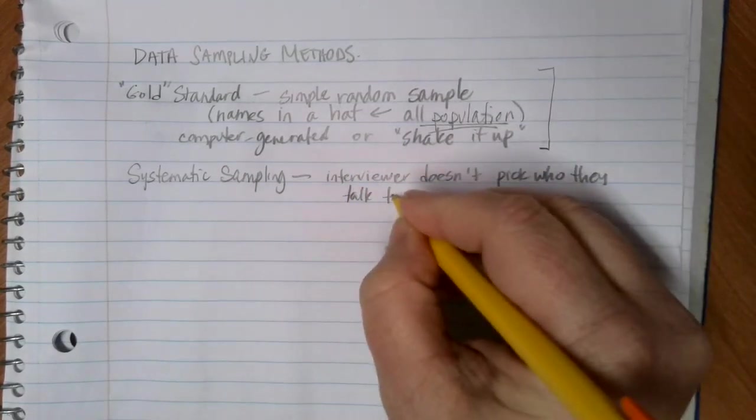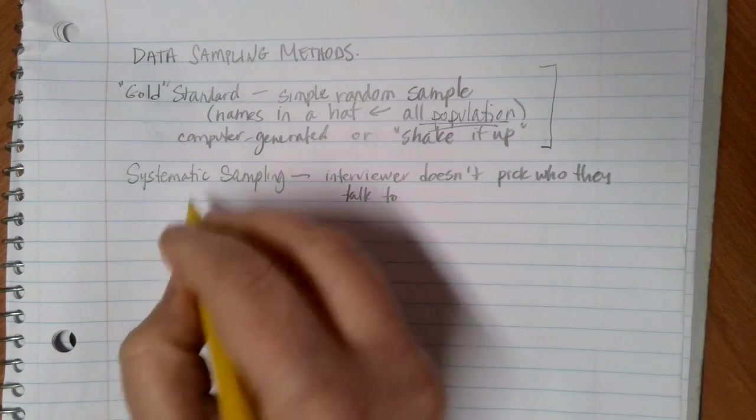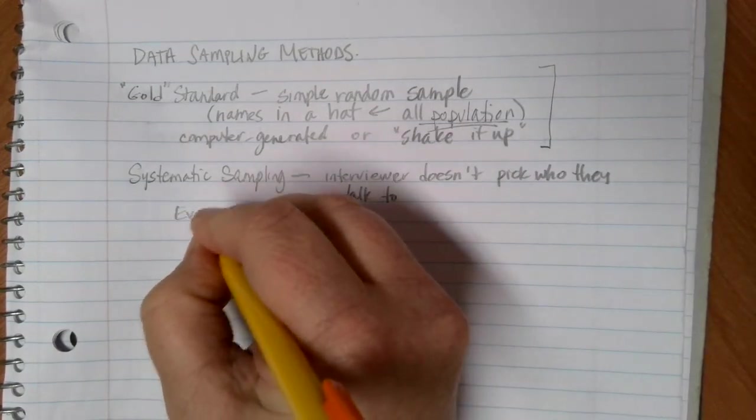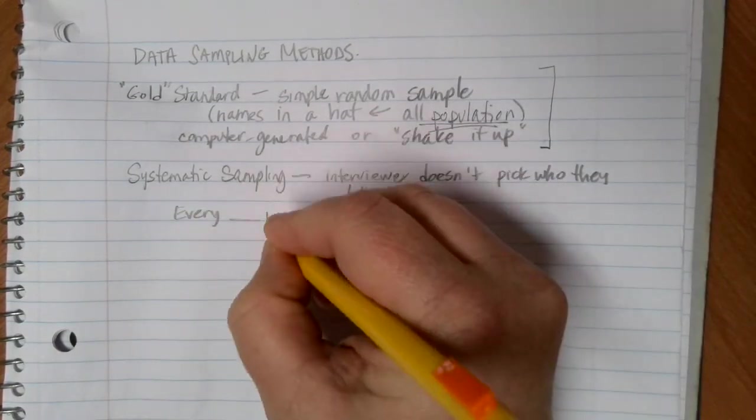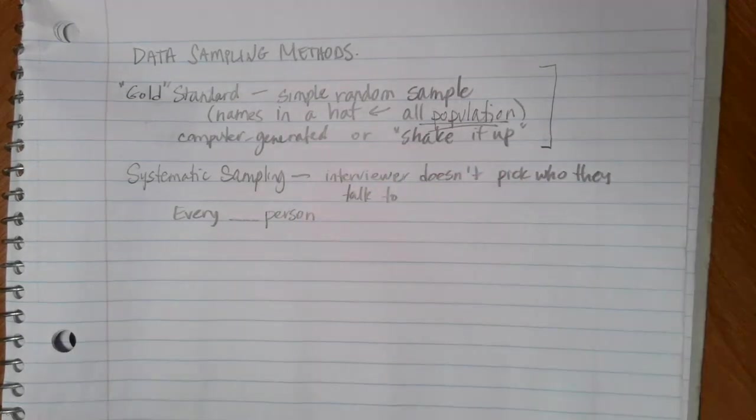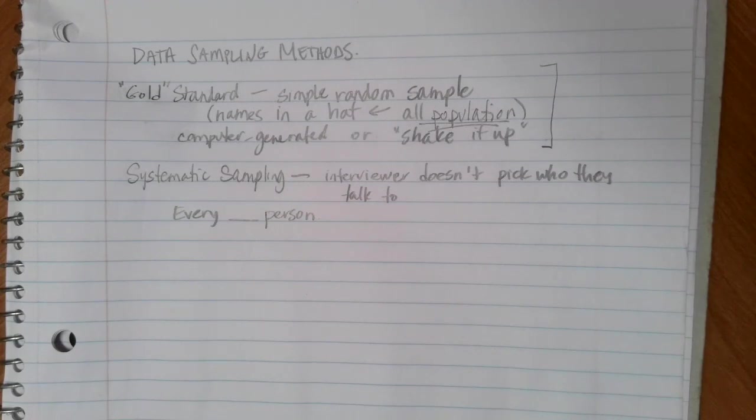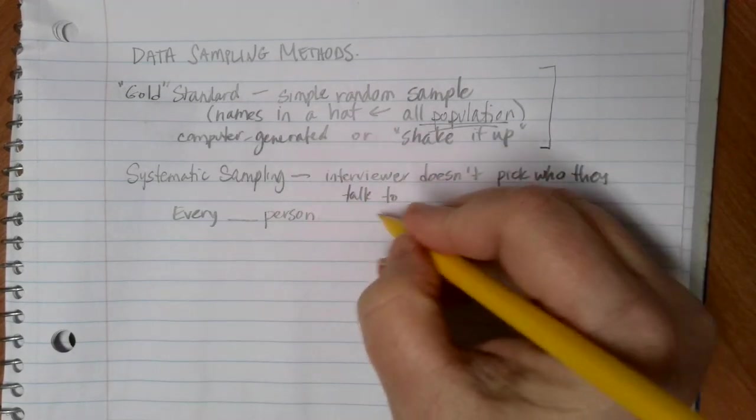The way that systematic sampling works is you're going to talk to maybe every blank person and give them the survey. So let's say you're standing outside of a store and you're going to talk to the 10th person that walks through the door every single time.